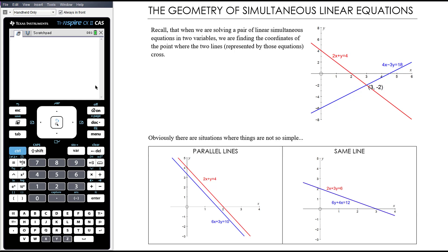In this section we want to consider the geometry of simultaneous linear equations. When we are solving a pair of linear simultaneous equations in two variables, we are finding the coordinates of the point where the two lines represented by those equations cross. So if we are simultaneously solving two equations, we are looking for the x and y values that simultaneously make both those equations true. Graphically, that means we are finding the coordinates of the points where those two lines cross.